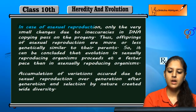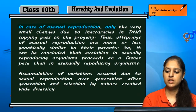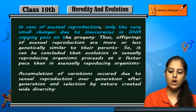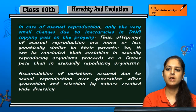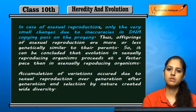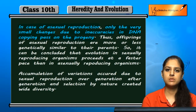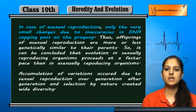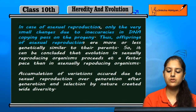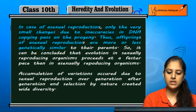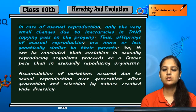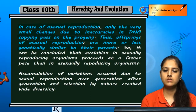In asexual reproduction, only very small changes due to inaccuracies in DNA copying are passed on to the progeny. There is little variation because there are little inaccuracies in DNA copying; otherwise, the same DNA is exactly copied. Offspring of asexual reproduction are more or less genetically similar to their parents, because if something is copied the same, they will be approximately similar.